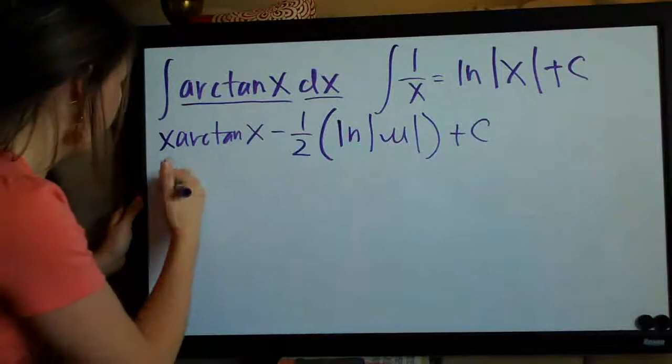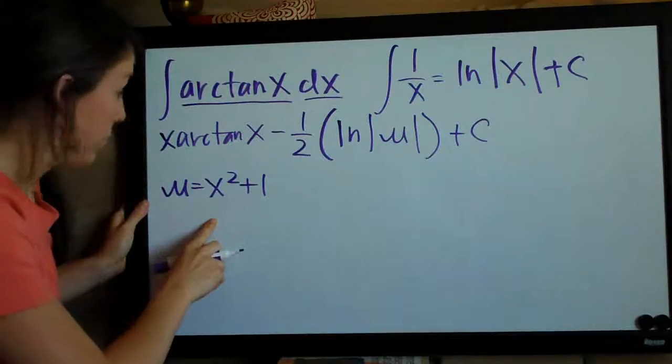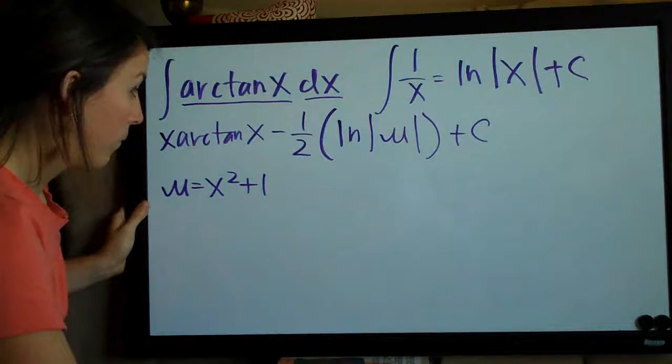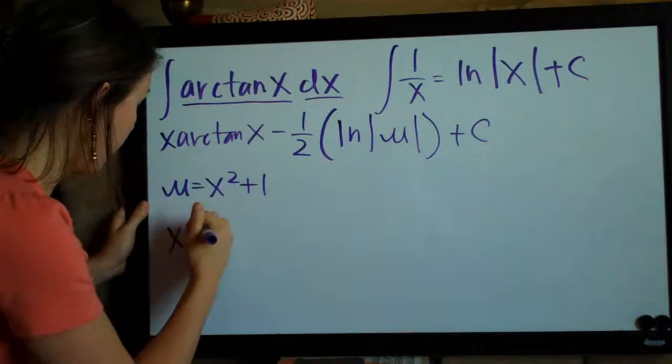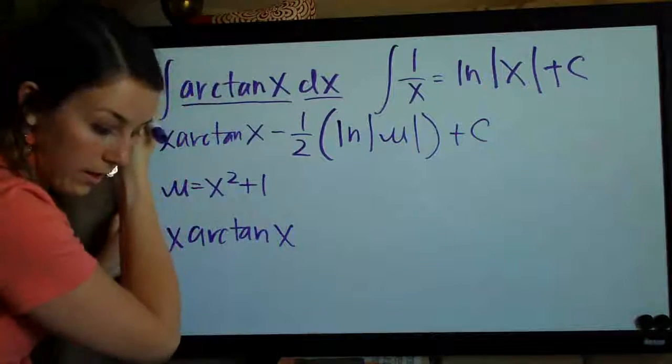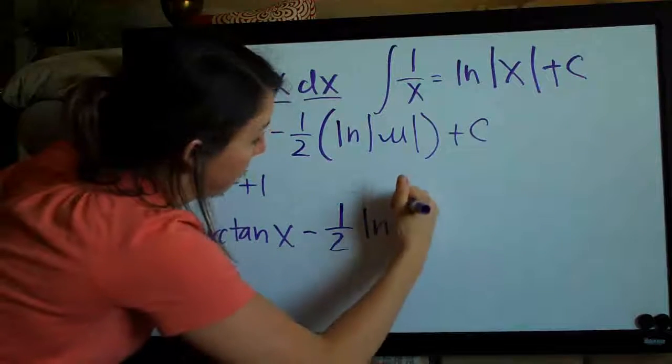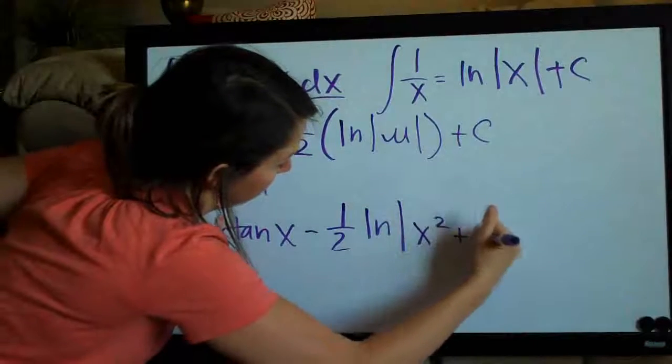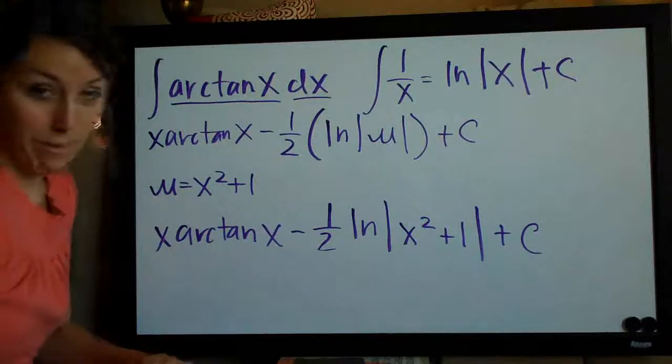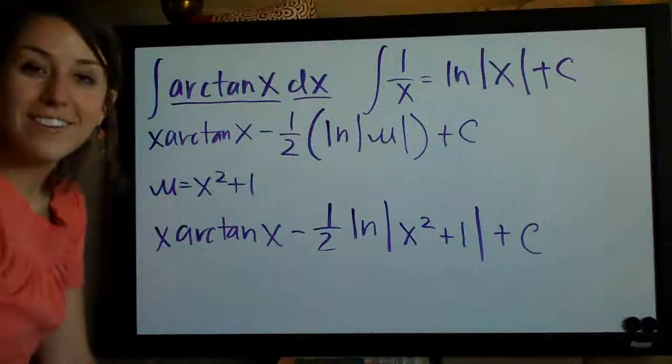And then the only thing left to do, you remember that we had said that u was equal to x squared plus 1 when we had done the u-substitution problem, all we need to do is plug it back in x squared plus 1 for u. So it's actually going to come out to be x arctan of x minus one half natural log of the absolute value of x squared plus 1 plus c. And now that we've used integration by parts and u-substitution back to back to integrate this arctan of x, we're done and that's our final answer. Thanks guys!